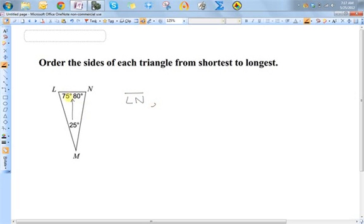And then the second one would be whichever one is across the second smallest angle. So 75, so that means nm, then across from 80, so lm.